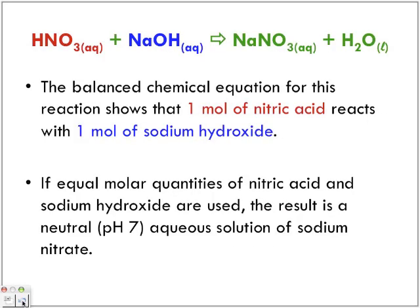The balanced chemical equation shows that one mole of nitric acid reacts with one mole of sodium hydroxide. So if equal molar quantities of nitric acid and sodium hydroxide are used, the result is a neutral aqueous solution of sodium nitrate. Concentration plays a very big role — just because we're combining an acid and a base does not mean we get a true neutralization, because we actually have one mole of each combined. Equal molar quantities of acid and base will give us a neutral pH of 7.